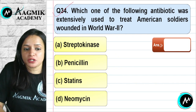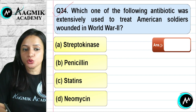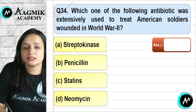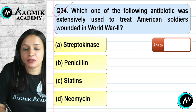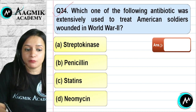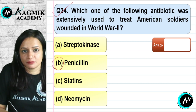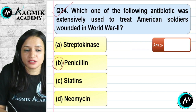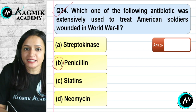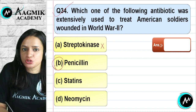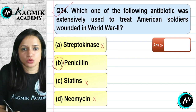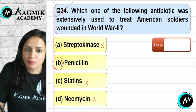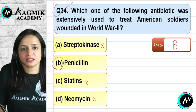Question number 34: Which antibiotic was extensively used to treat American soldiers wounded in World War II? Penicillin was discovered around that time and used extensively. Streptokinase is not an antibiotic. Statin is not an antibiotic. Neomycin is an antibiotic but was not used then. The antibiotic used was penicillin. The correct option is B.